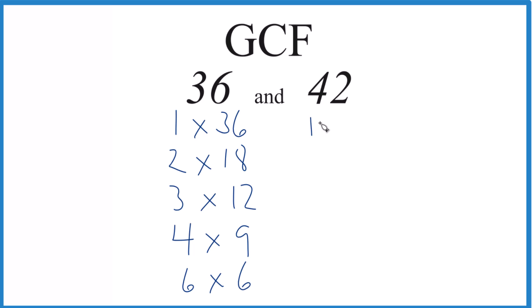For 42, we have 1 times 42, that equals 42, 2 times 21 equals 42, 3 times 14, that equals 42, and then I think just 6 times 7. So we have the factors for 36, 42. We have our factors.